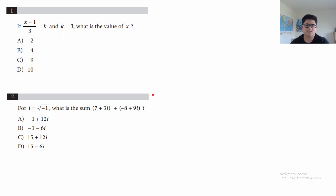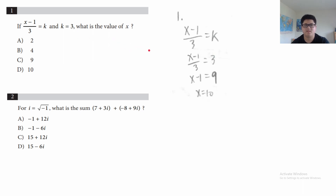The SAT questions start off super easy but get harder throughout the test. Question 1 says: if (x minus 1) over 3 is equal to k and k is 3, what is the value of x? This is pretty self-explanatory. You have (x−1)/3 = k, set k equal to 3, then multiply both sides by 3 and add 1 to both sides, which gives you x equals 10. The answer is D.